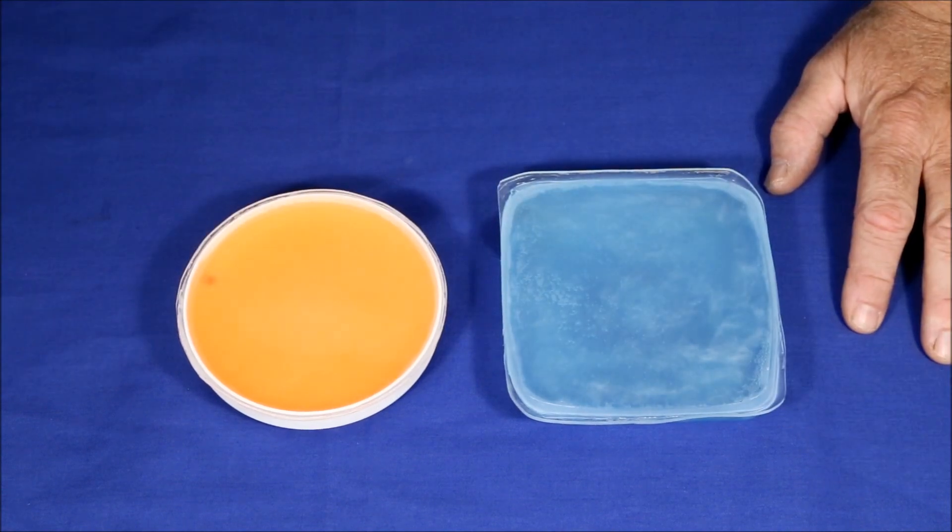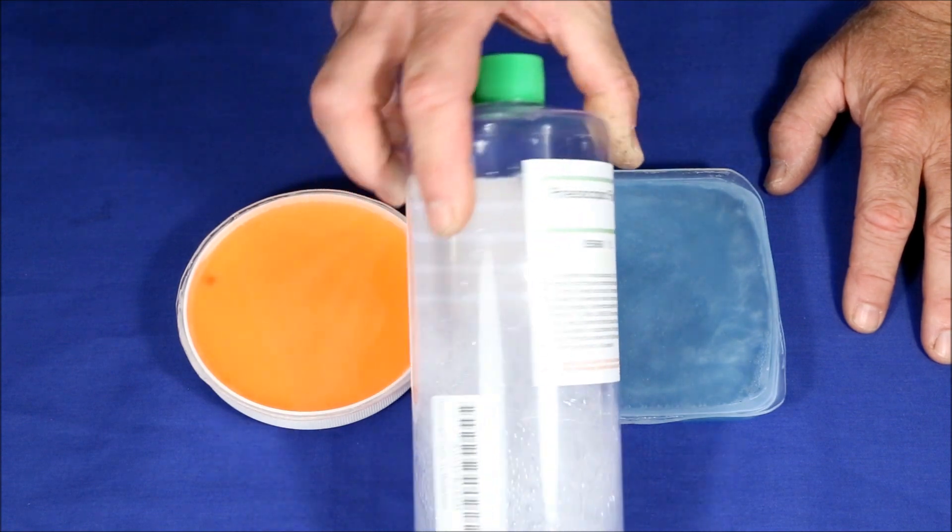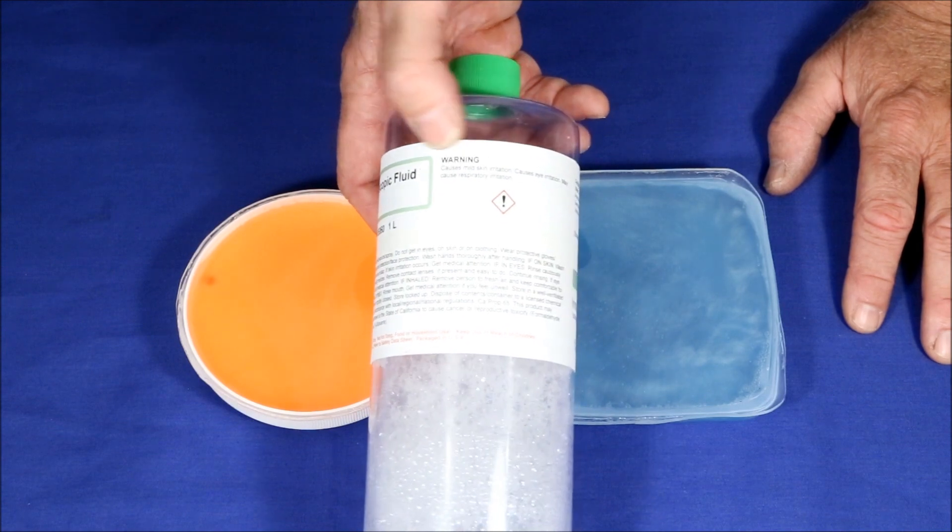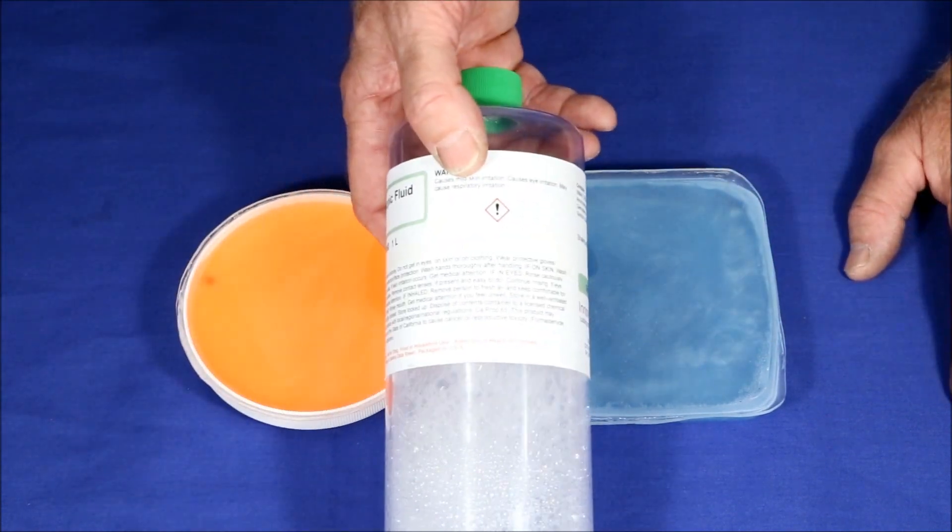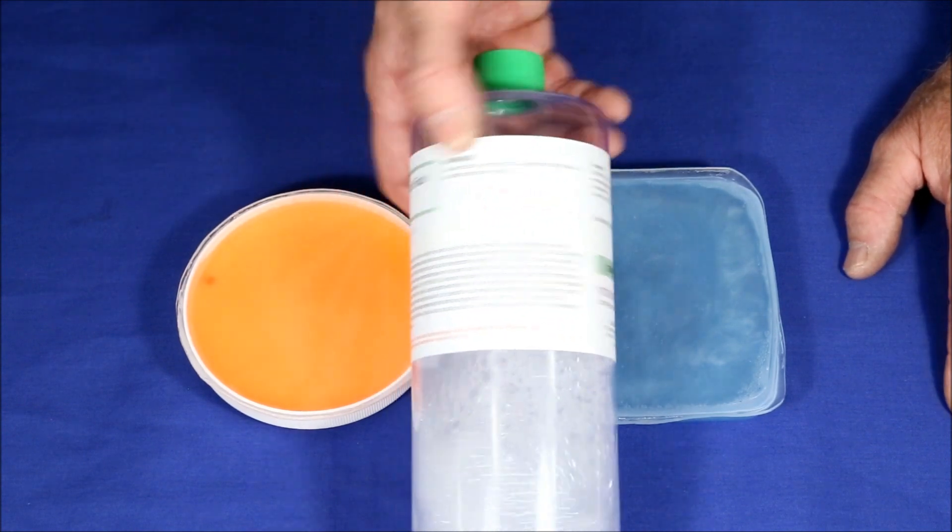Finally, the rayoscopic fluid that you can buy online is pretty expensive. A one liter bottle like this is twenty-six, twenty-seven dollars from Amazon. And this is fine if you're only going to build one or two, but if you want to build more or larger ones, this stuff just gets too expensive.